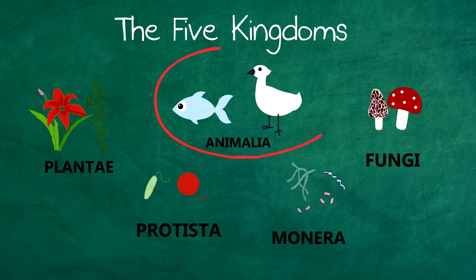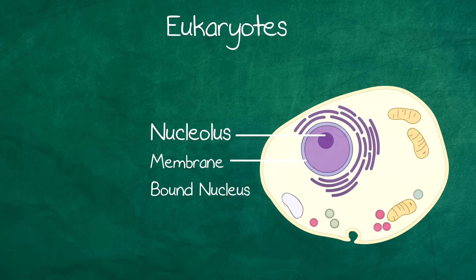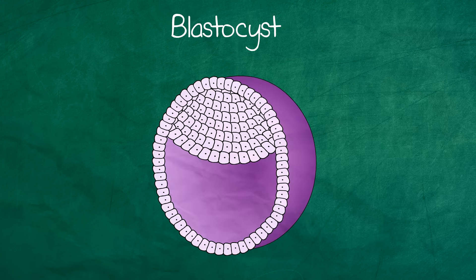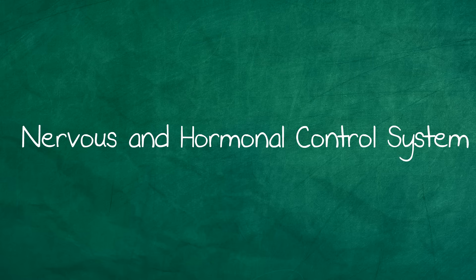Starting with animals, also known as Animalia. They are eukaryotic, multicellular, and have no cell walls. They develop from a blastocyst, which is part of the embryo development. They have both nervous and hormonal control systems.